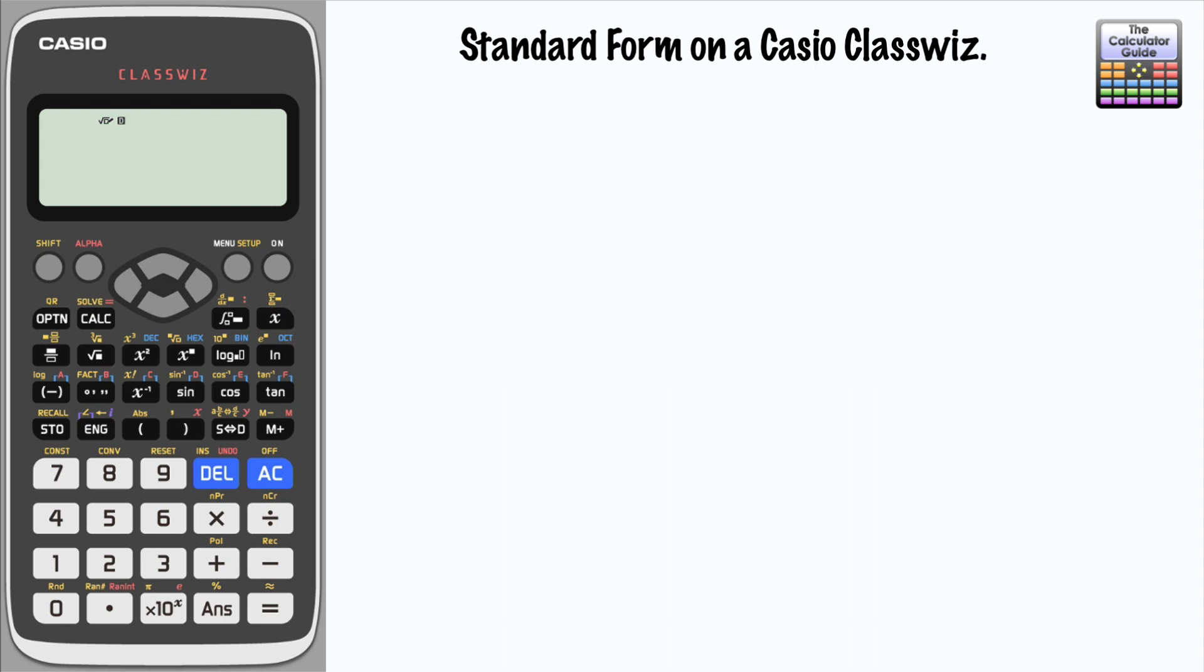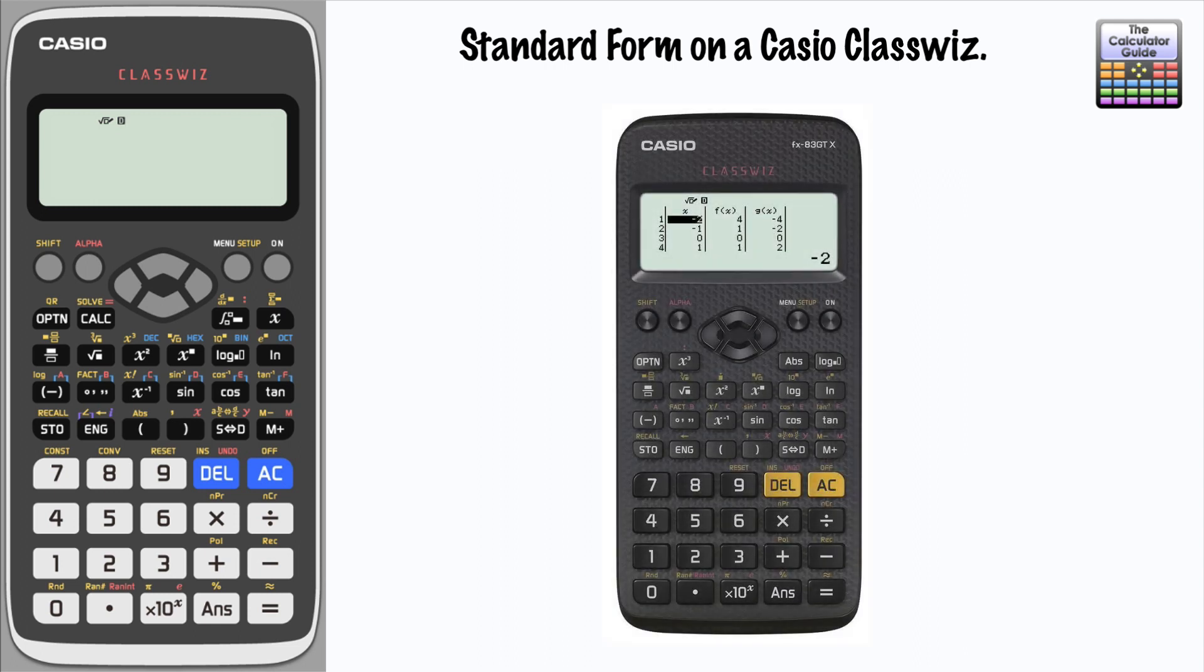In this video we're going to look at changing between standard form and ordinary numbers on a Casio ClassWiz. I'm using an FX 991 EX but all the information is equally valid if you've got the FX 83 or 85 model instead. It's exactly the same procedure for those two.